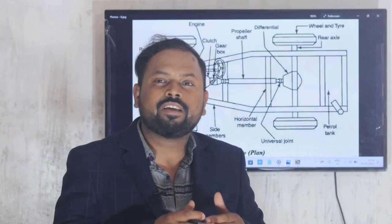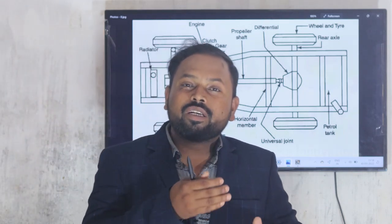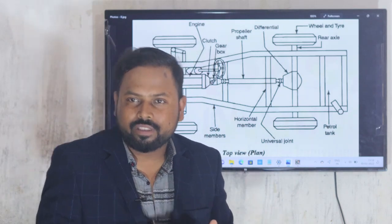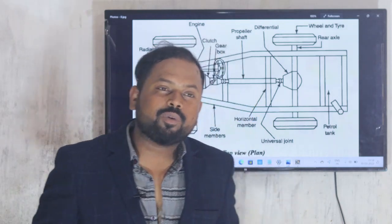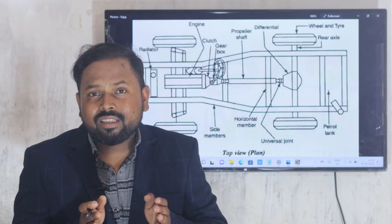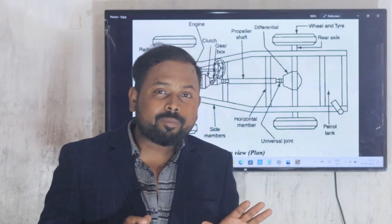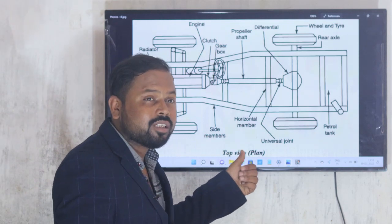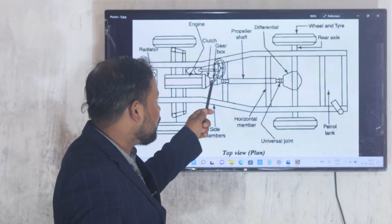The clutch is required when we slow the vehicle — at speed breakers, in traffic, at hill stations. When reducing speed we reduce the gear, for example from fourth to third, second, or first. When increasing speed we apply the clutch and shift up through the gears. Without applying the clutch an awkward sound occurs, so the main function of the clutch is to engage and disengage the engine output from the gearbox input.